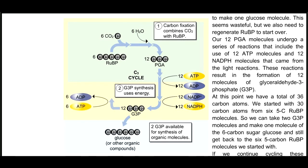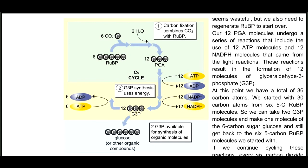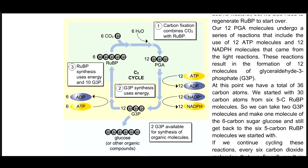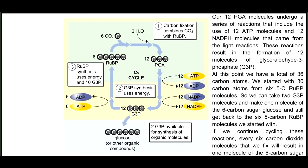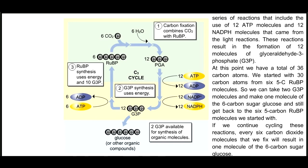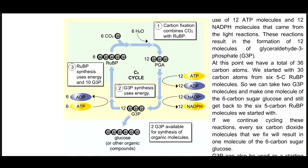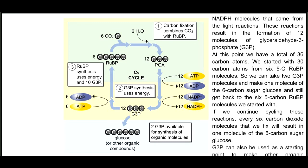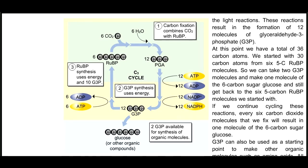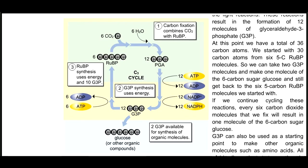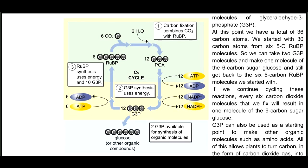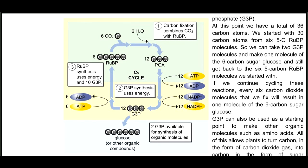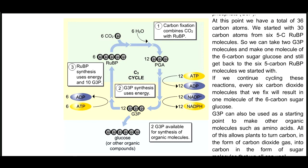If we continue cycling these reactions, every 6 carbon dioxide molecules that we fix will result in one molecule of the 6-carbon sugar glucose. G3P can also be used as a starting point to make other organic molecules, such as amino acids. All of this allows plants to turn carbon in the form of carbon dioxide gas into carbon in the form of sugar molecules that we all can use.